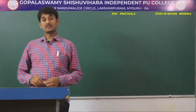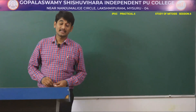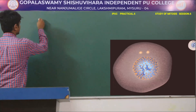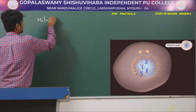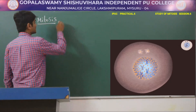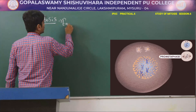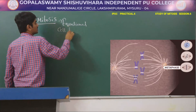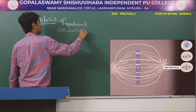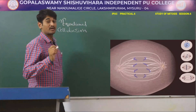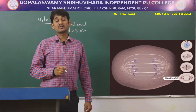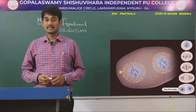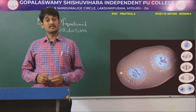In this session we are going to discuss about one of the important cell divisions that takes place in somatic cells, that is called mitosis. Mitosis is also called equational cell division, because both parental and daughter cells have the same number of chromosomes after division. Mitosis takes place in somatic cells.